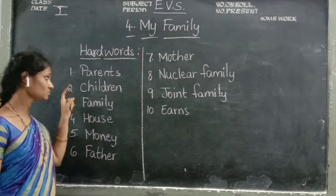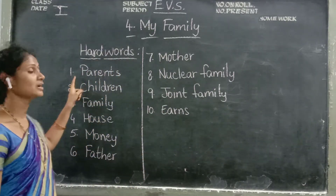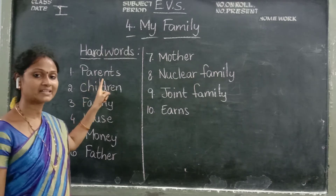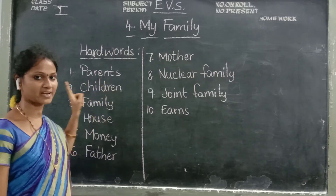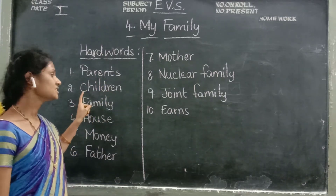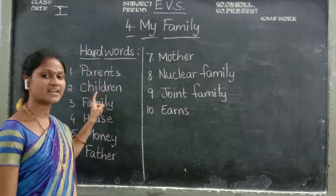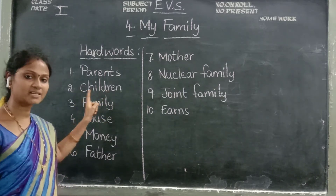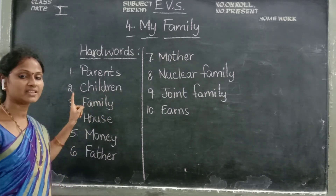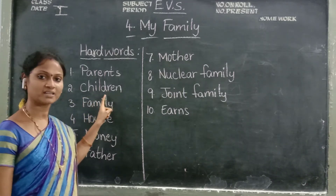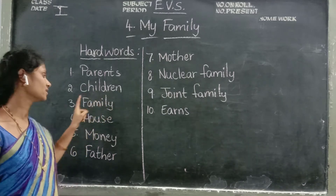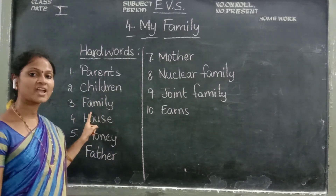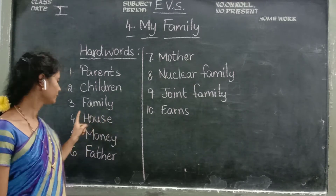One more time, children. The first one: parents. P-A-R-E-N-T-S. Parents. Children: C-H-I-L-D-R-E-N. Children. Third one: family. F-A-M-I-L-Y. Family.